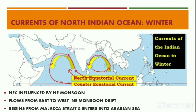Let's look into the currents of the northern part of the Indian Ocean during the winter season. The North Equatorial Current is influenced by the northeast monsoon, and hence the water starts moving from east to west. This is known as the Northeast Monsoon Drift.